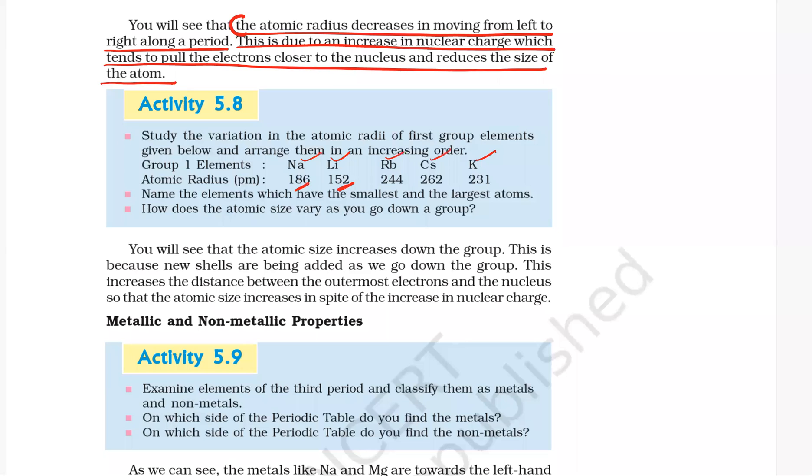First is 152, so first will be lithium, then will be sodium, then potassium, and then it will be rubidium, and then cesium.